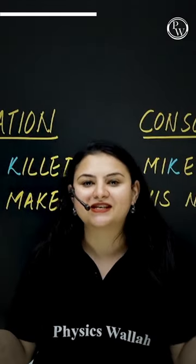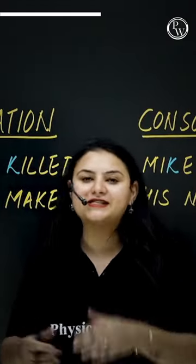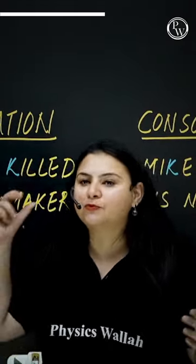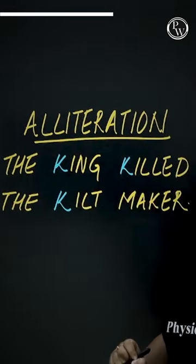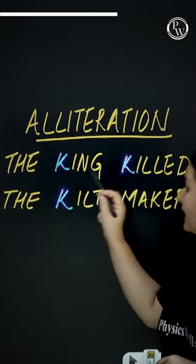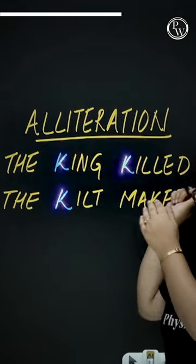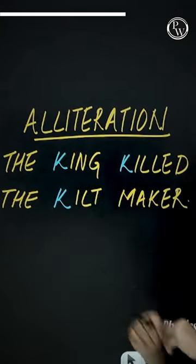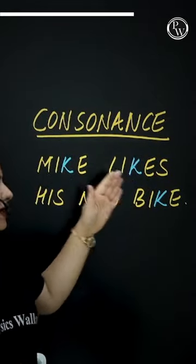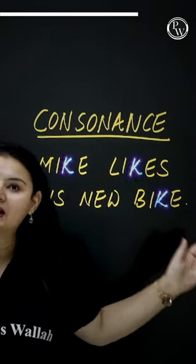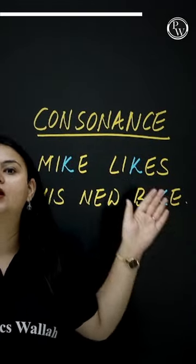So where is the difference? The difference lies in the position. In the case of alliteration, we can see that K is at the starting of the words. But in consonance, K can be anywhere in the word.